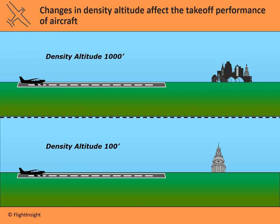On takeoff, because the engine produces less power, it's going to take us longer to get to our takeoff speed. And because the wing is producing less lift in less dense air, we need to fly faster to get the airplane off the ground. Those two factors together mean we're going to eat up more ground before the airplane will depart. In the Kansas City model at 1,000 feet density altitude, you have a longer ground run to get the aircraft off the ground than in Maryland at 100 feet.